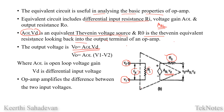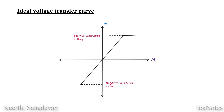Output voltage equation: V0 is equal to gain A with open loop suffix, times the differential input voltage. That is V0 = A_OL times (V1 minus V2). This amplifies the difference between the two input voltages. This is the equivalent circuit of the op-amp.